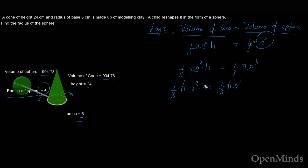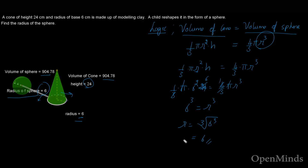Substituting h as 24 and simplifying: 6 squared times 24 divided by 4 gives us 6 cubed on the left-hand side. So r cubed equals 6 cubed, which means r is the cube root of 6 cubed — that is simply 6. So the radius of the sphere is 6 centimeters.